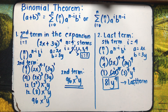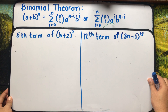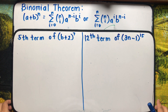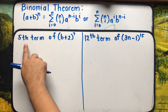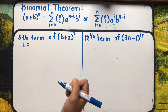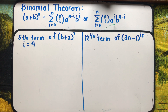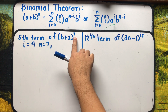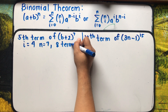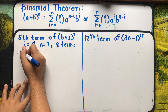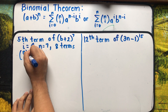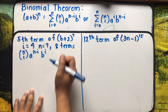Let's now try other examples. We're asked to get the fifth term of (b + 2) raised to 7. For the fifth term, i equals 4. Our n equals 7, so we have 8 terms. The formula is n choose i times a raised to (n minus i) times b raised to i, where a equals b and b equals 2.